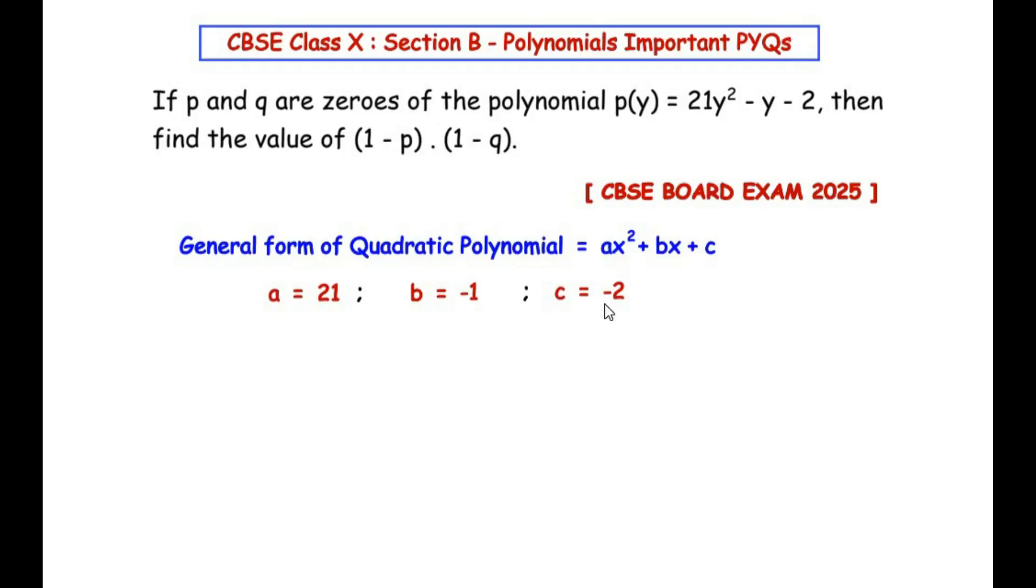Now let us write down the formulas relating the zeros with the coefficients. In general the zeros are represented as alpha and beta. So sum of zeros is α + β, and in terms of coefficients the sum of zeros is -b/a. Product of zeros is αβ and in terms of coefficients it's going to be c/a.